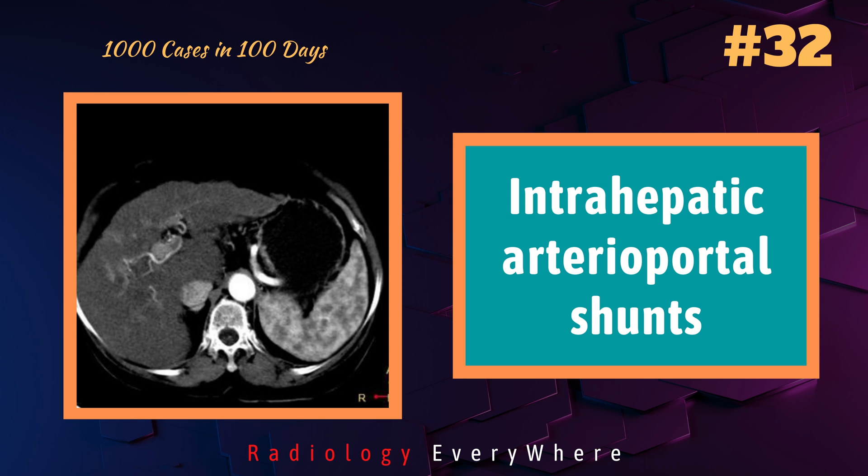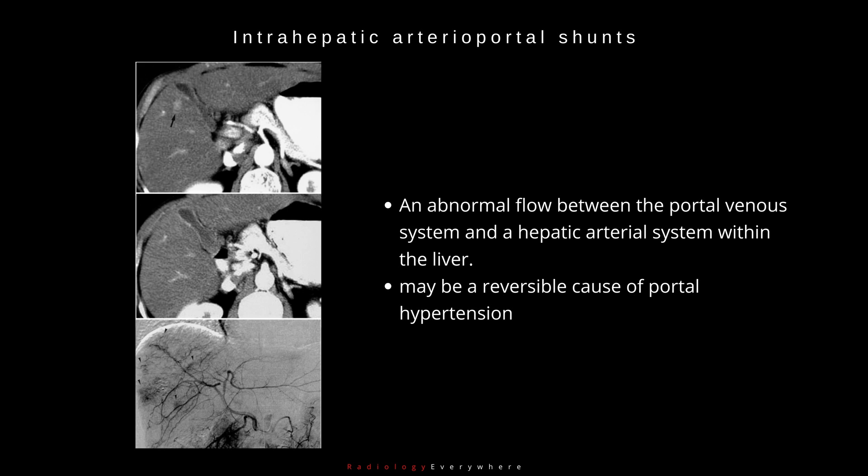In this video, we discuss intrahepatic arterioportal shunts. This is due to abnormal flow between the portal venous system and a hepatic arterial system within the liver. It may be a reversible cause of portal hypertension.